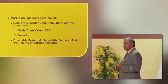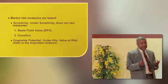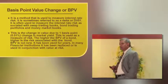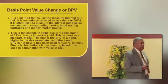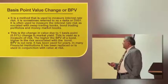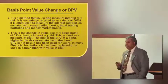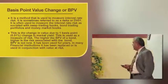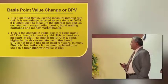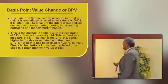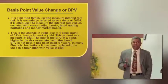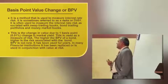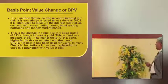Basis point value cannot be applied to equities because equities are not linked to any coupon. BPV, also called DV01 (delta value, 0.01%), is a method used to measure interest rate risk. It is sometimes referred to as delta or DV01 and is often used to measure interest rate risk associated with swap trading books, bond trading portfolios, and money market books. The change in value due to one basis point (0.01%) change in market yield is the measure of risk — the higher the BPV of a bond, the higher the risk.